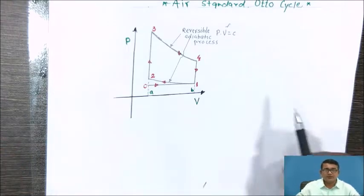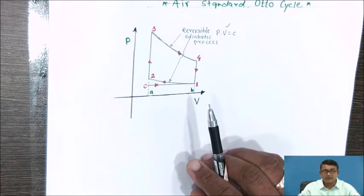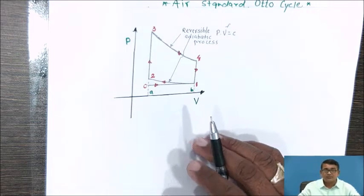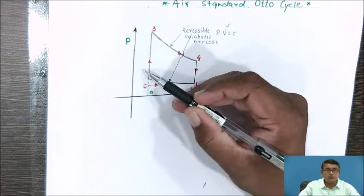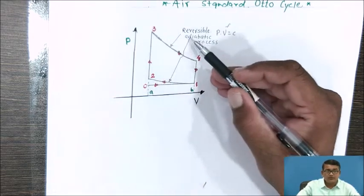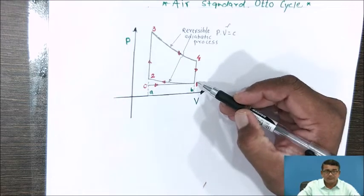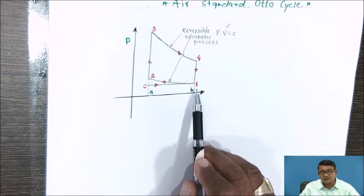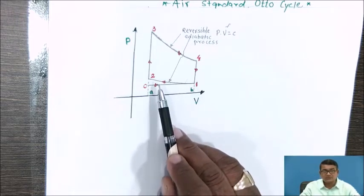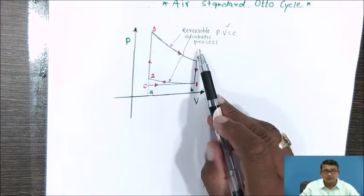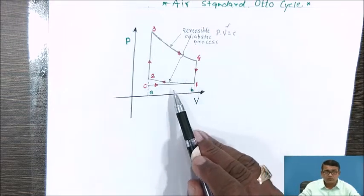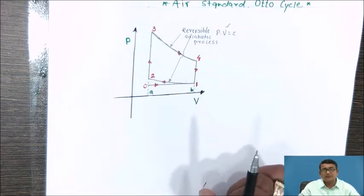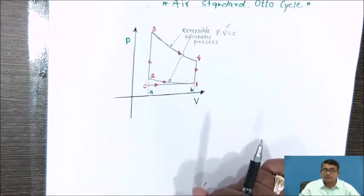Here I am showing the graph of this air standard cycle. Basically there are four processes in the cycle: process 1 to 2, 2 to 3, 3 to 4, and back to initial condition 1. There are two adiabatic processes and two constant volume processes.